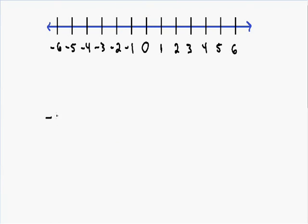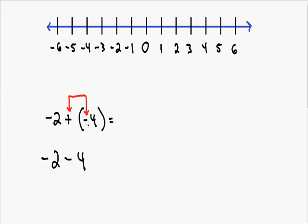Let's say we have negative two plus a negative four. Notice how we have a plus sign and a minus sign right next to each other. A positive and a negative together are the same thing as a minus sign — so you could say negative two minus four instead of negative two plus negative four. It's the same thing.